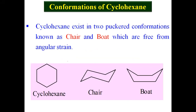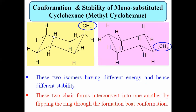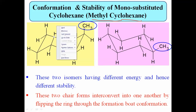We have studied conformations of cyclohexane, and we also studied the confirmation and stability of monosubstituted cyclohexane. Taking methylcyclohexane as an example, it has two conformers: in the first case the methyl group is at the axial position — the axial isomer — and in the second case it is at the equatorial position — the equatorial isomer. So methylcyclohexane has two chair conformations: axial and equatorial.